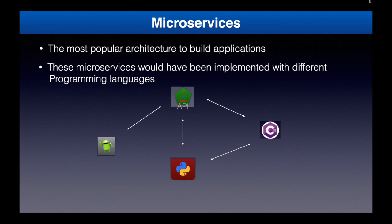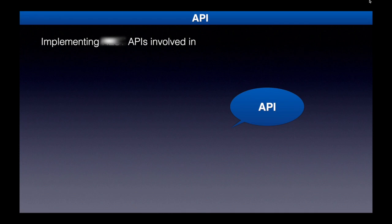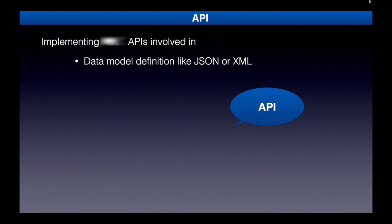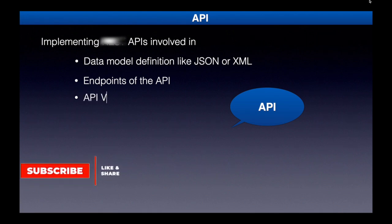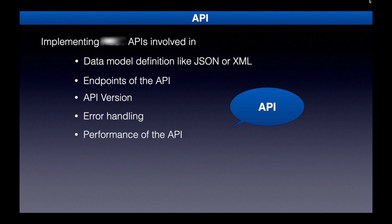Implementing REST APIs involves a lot of things to consider. Data model definition — like JSON or XML — which data format to choose, the endpoints of the API and what pattern to follow, API versioning and how to manage versions, error handling when accessing any API, and the performance and scalability of the API.